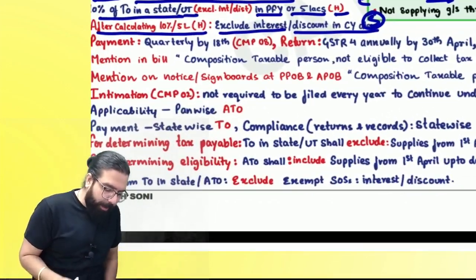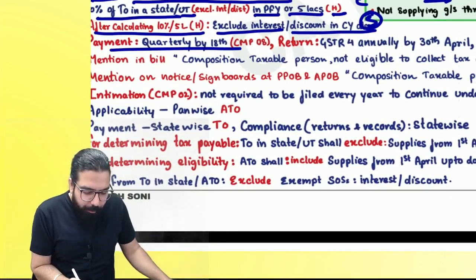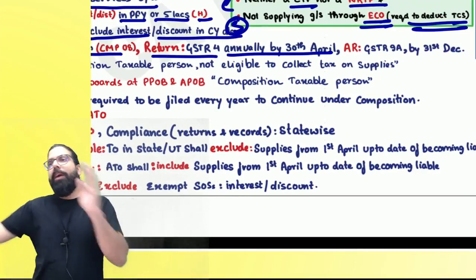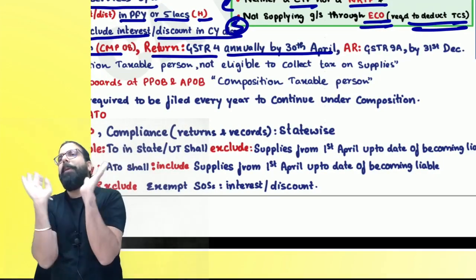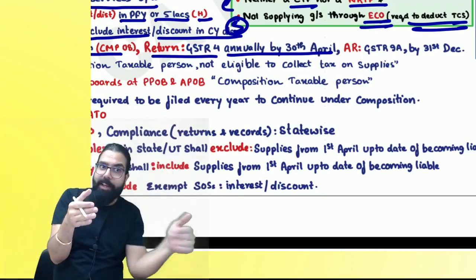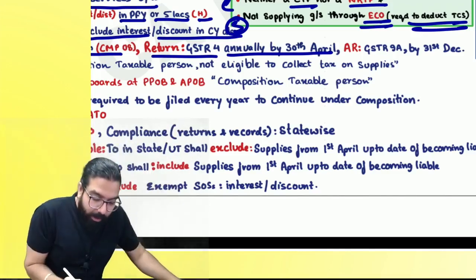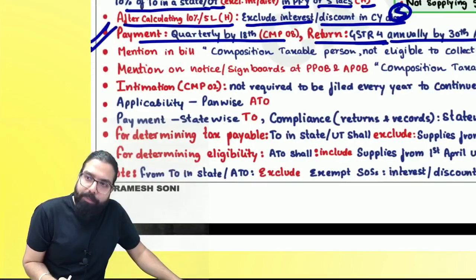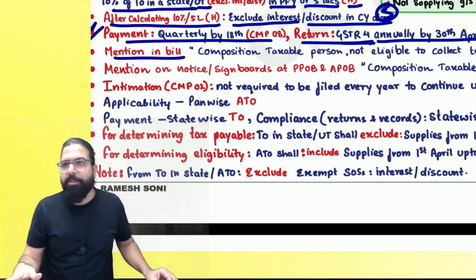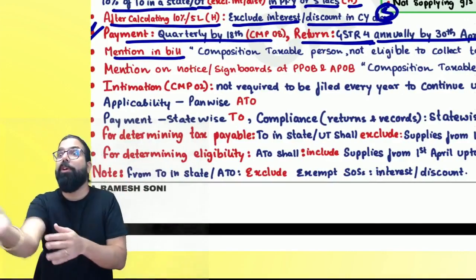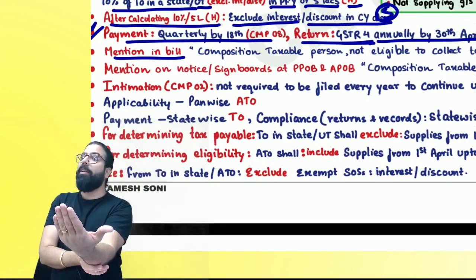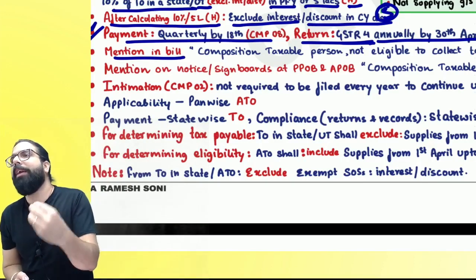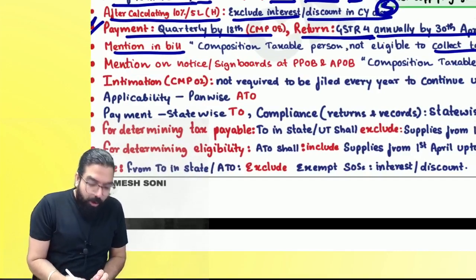Now the procedural part: how to pay under Composition Scheme. You have to pay every quarter by the 18th by filing CMP-08. You have to file GSTR-4 annually by 30th April. So every quarter, whatever your turnover, by the 18th pay your 0.5%+0.5%, 2.5%+2.5%, or 3%+3%. Annually file one GSTR-4 by 30th April, and the annual return is GSTR-9A by 31st December. When issuing an invoice, mention that you are a Composition Taxable Person and not eligible to collect tax.